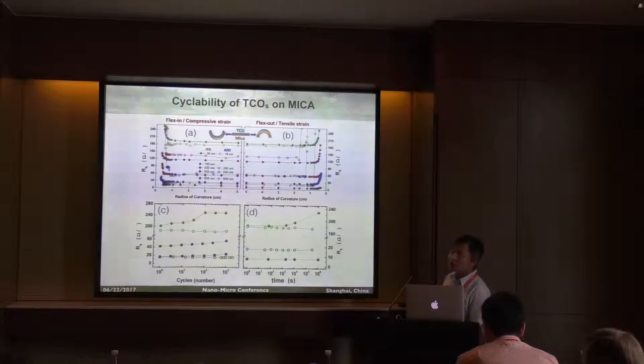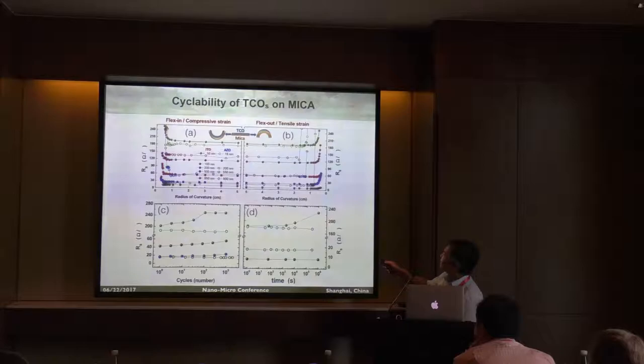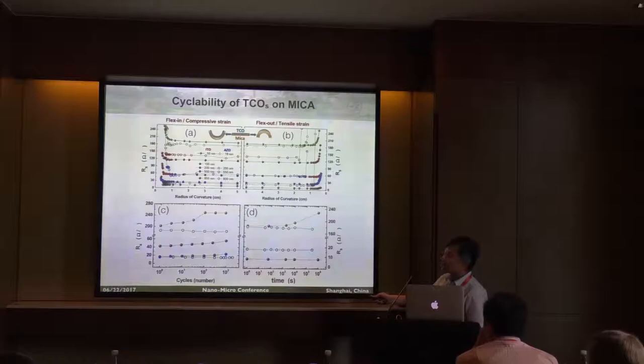Now we have a transparent substrate and transparent electrode, and we want to confirm that everything is flexible. We checked the flexibility of our samples — you can bend a sample in one direction or another. The smallest bending radius we can achieve is about 5 millimeters. We can also bend it many times — we bent a sample 17 times and some samples retained very nice electrical performance. We also did a retention test, bending the sample repeatedly and measuring how stable the electrode performance is.